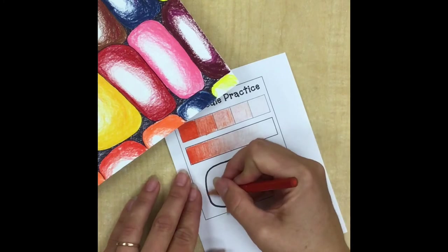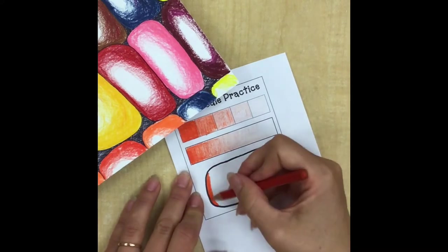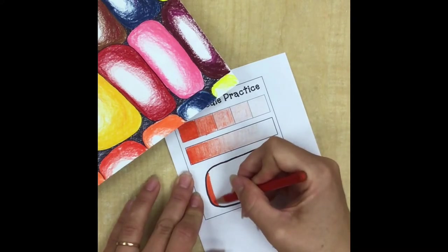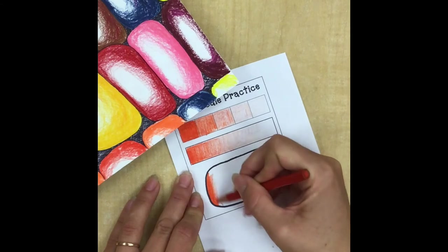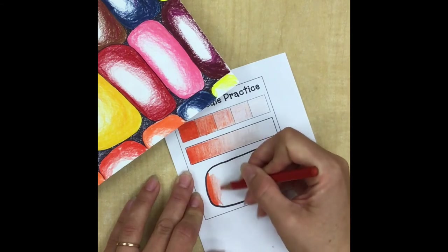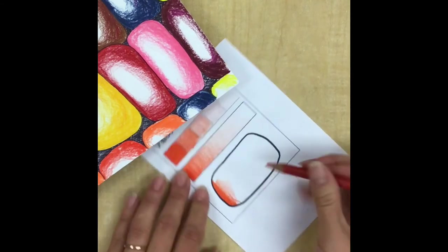So I'm going to just pick any side to start working. I'm coloring hard when I'm close to the edge, and then as I get towards the center, I get lighter. I'm going to turn my paper as I work so that I can have the right angle for my coloring.